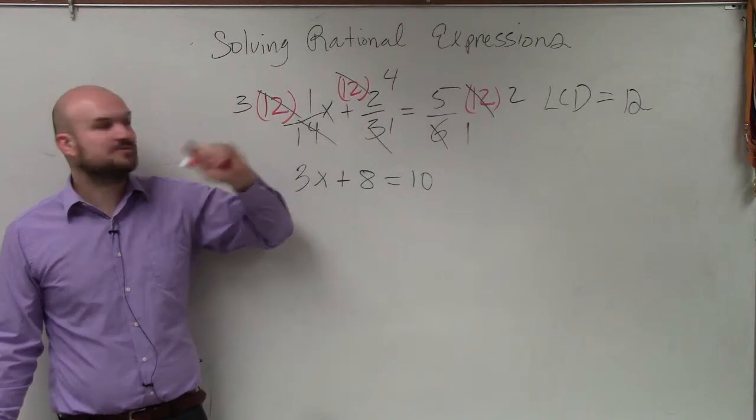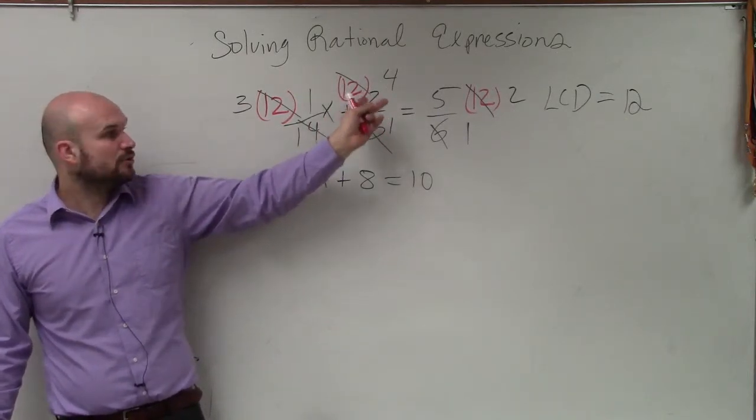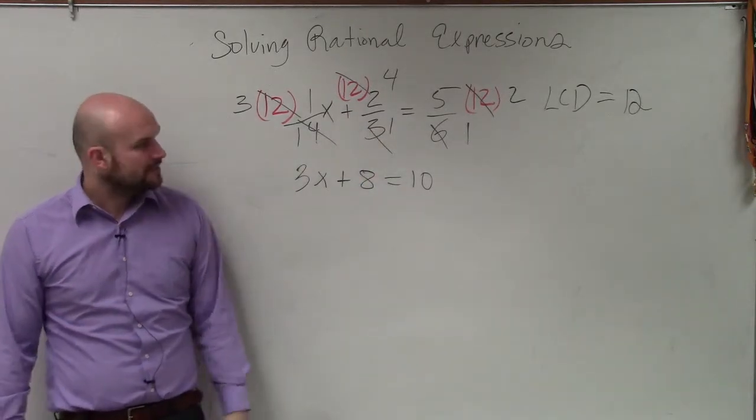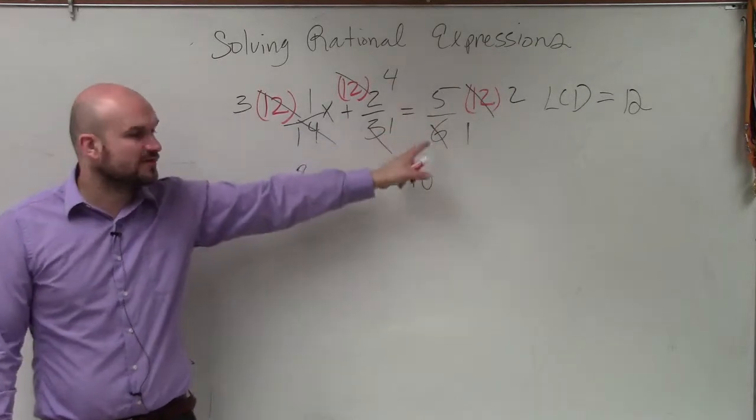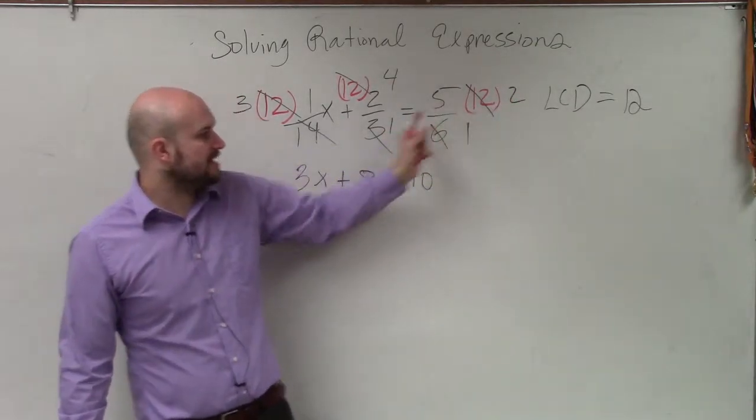If you want to do it this way, do it this way. 12 times 2 is what? 24. 24 divided by 3 is 8. It's the same thing. And then this one, I did 12 over 6, which is divided to 2 over 1, Danielle. And then 2 times 5 gives you 10.